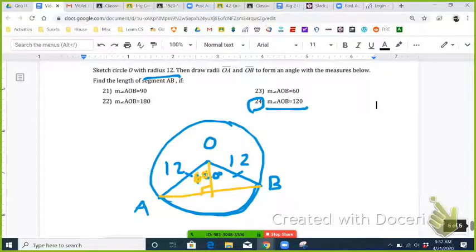And now each of these angles are 60, and each of these angles are 30. So that means that if the hypotenuse is 12, this short leg here would be 6.